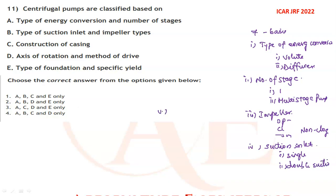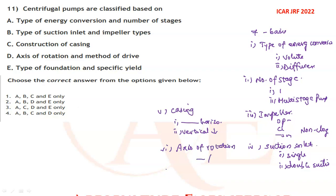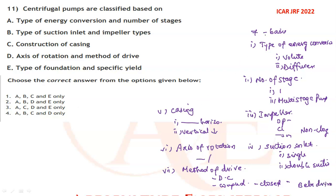The fifth is construction of casing — vertical or horizontal. The sixth is axis of rotation — horizontal or vertical. The seventh is method of drive — directly connected, coupled, close coupled, or belt driven. These seven are the basic classifications of centrifugal pumps.